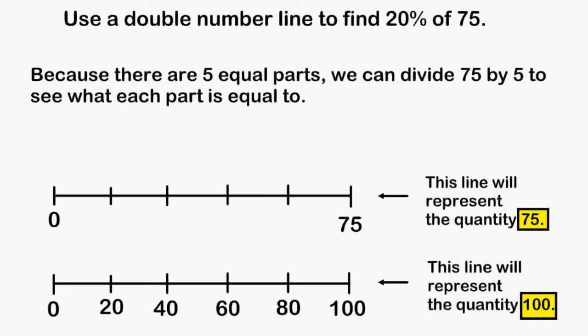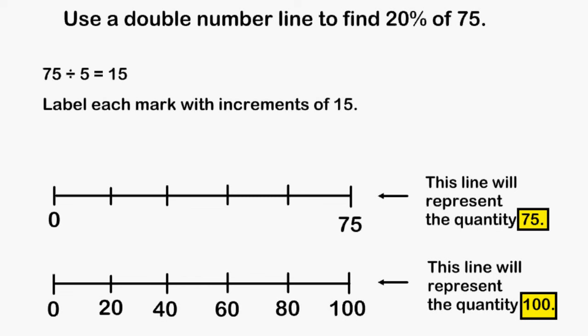Notice on the number line that goes from 0 to 75 we have divided that into 5 equal parts. So to figure out what numbers we should label each increment on our top number line we can simply divide 75 by 5. 75 divided by 5 is 15, so we may label each mark by increments of 15.